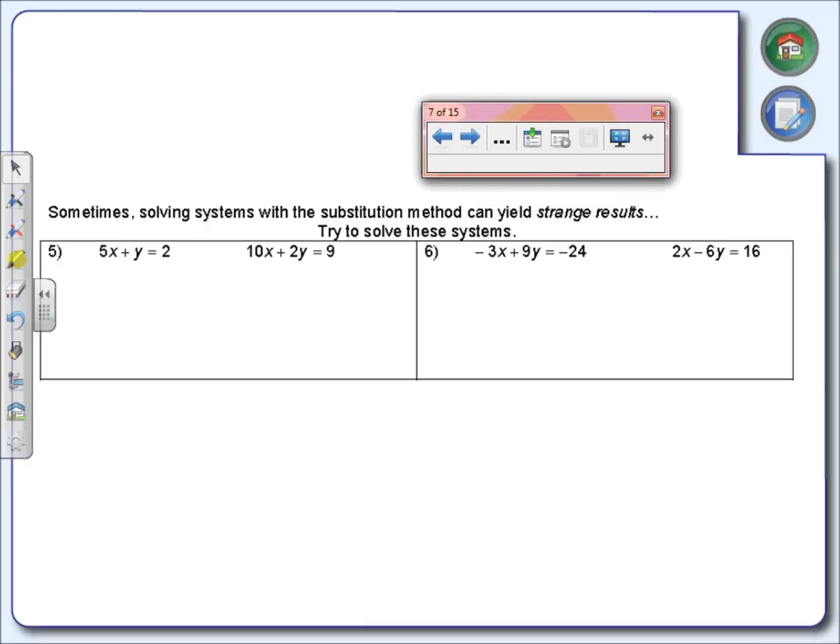Now, it says that sometimes solving systems with substitution can yield some strange results. What do they mean when they say strange results? Well, let's take a look here. We're going to do two more examples.